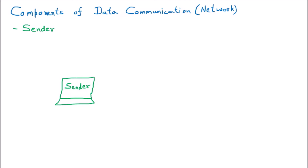If a sender is there, for sure there will be some kind of person or device that is going to receive that data. So another computer should be available, and that is called the receiver. The next component of data communication is the receiver, which is going to receive the data.